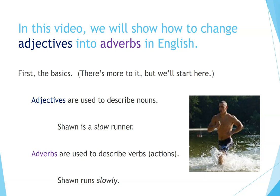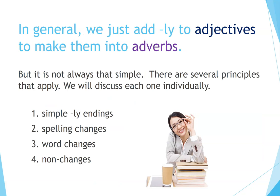Adjectives are used to describe nouns — for example, 'Sean is a slow runner.' Adverbs are used to describe verbs or actions — for example, 'Sean runs slowly.' In general, we just add -ly to adjectives to make them into adverbs, but it is not always that simple. There are several principles that apply, and we will discuss each one individually.